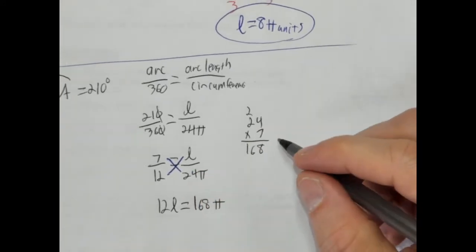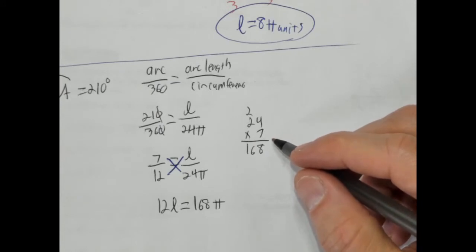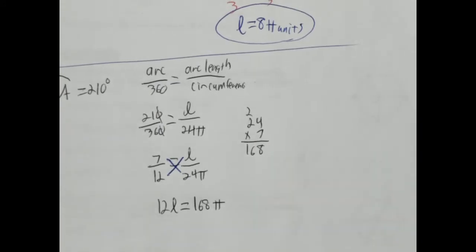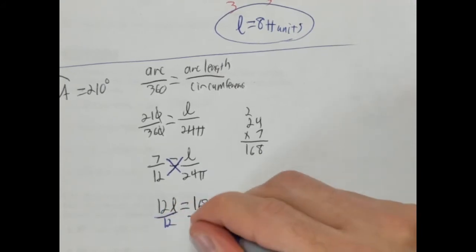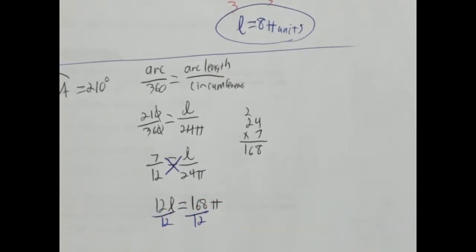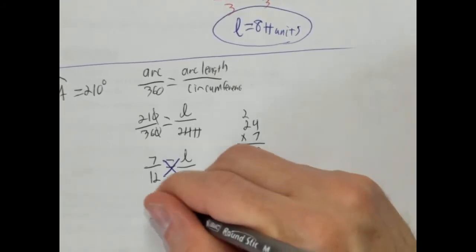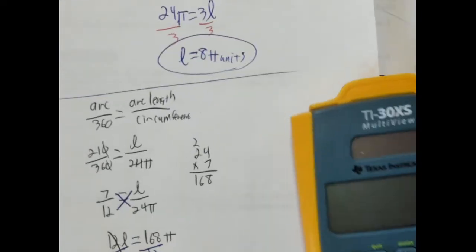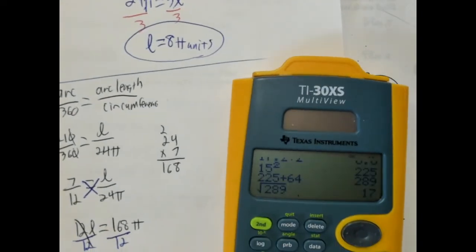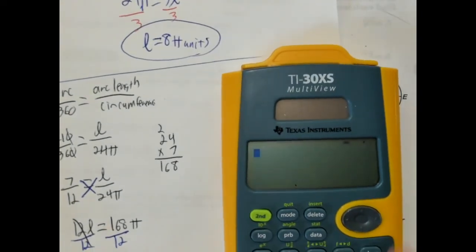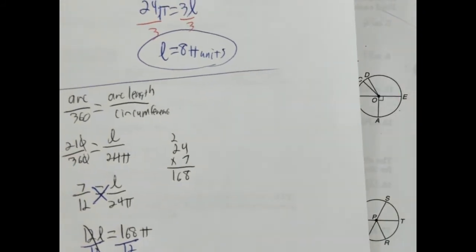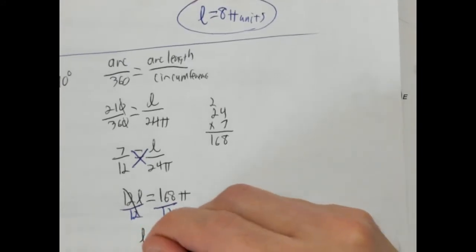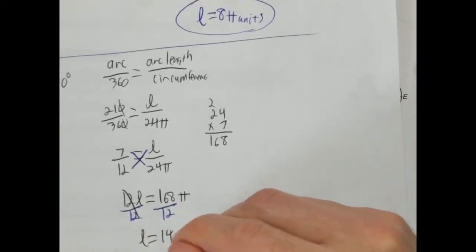And now we're going to divide both sides by our coefficient, which is 12. This is round to the nearest tenth. We're going to leave that in terms of pi. Now this one we're probably going to leave in terms of pi as well. So 168 divided by 12, 14. So this is going to be arc length is going to be 14 pi units.